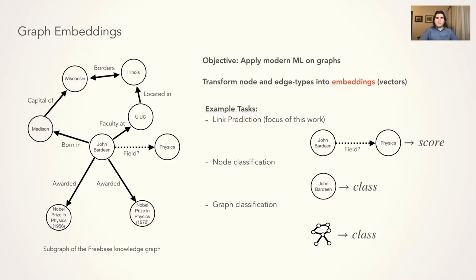Graph embedding methods transform the nodes and edge types of a graph into high-dimensional vectors, known as embeddings, where these embeddings can then be used to make predictions about the structure of the graph or as features in a downstream model. We consider link prediction in this work, where candidate edges are assigned a score based on the function of a source, edge type, and destination embedding.